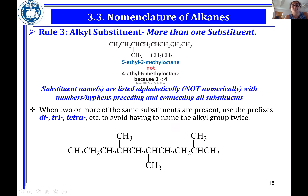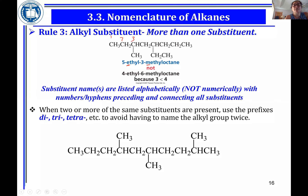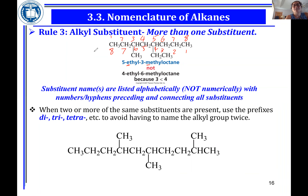Which should come first — ethyl or methyl? Based on alphabetical order, E comes before M, so ethyl comes first. Should you number from right to left or left to right? If you number right to left, the number set is five and three; from left to right, it's four and six. Since four plus six is higher than five plus three, you must go right to left — that direction gives you smaller numbers.